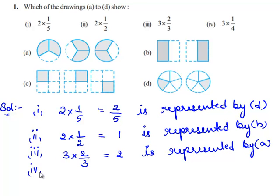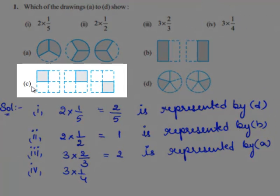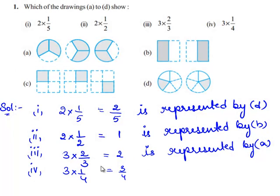Now let us identify which drawing represents the fraction 3 times of 1 by 4. When we observe drawing C, there are 4 squares, each divided into 4 parts. In each square, one part is shaded, so each square represents the fraction 1 by 4. Since there are 3 squares, this drawing represents 3 times of 1 by 4, which is equal to 3 by 4. Therefore 3 times of 1 by 4 is represented by drawing C.